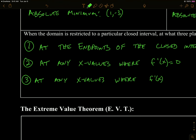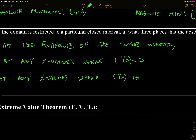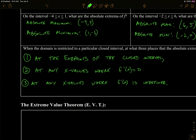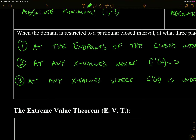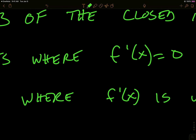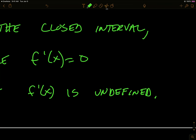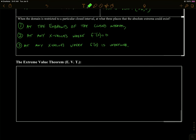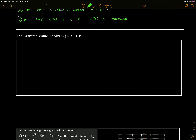We don't actually have to test to see if it is an extrema when we have a closed interval. Maybe the sign analysis shows positive, positive, even though the derivative was zero there — but we don't care when we're looking for absolute extrema on a closed interval. We don't care if those x values where f prime of x is zero or undefined turn out to be relative extrema or not, because we're not concerned with relative extrema — we are concerned with absolute extrema.